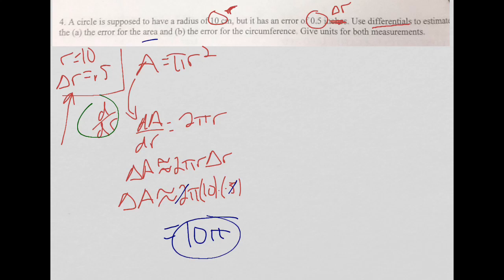So let's do part B. B is asking the same thing, except for with circumference. So I start with circumference. You should know that that is 2 pi R. Now I DDR it, so that gives me DC DR equals 2 pi.